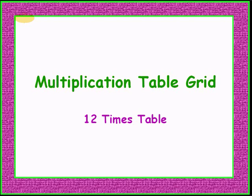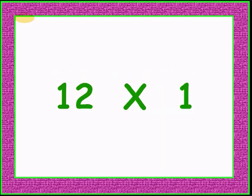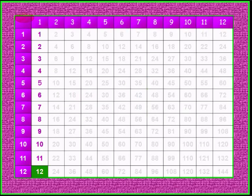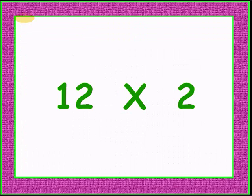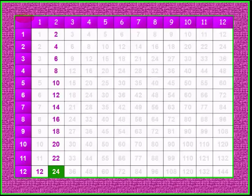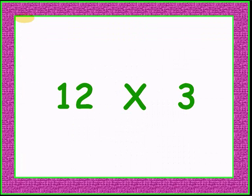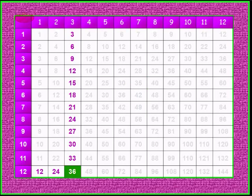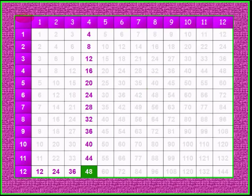Let's try it again. Please repeat with me. 12 times 1 gives 12. 12 times 2 gives 24. 12 times 3 is 36. 12 times 4 gives 48.